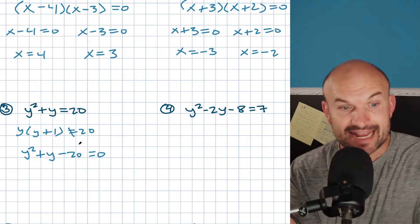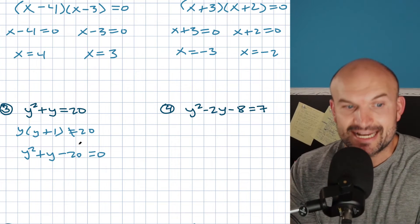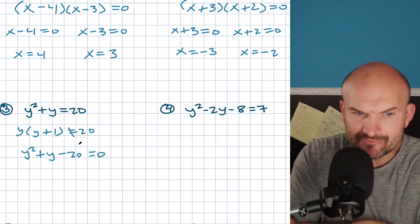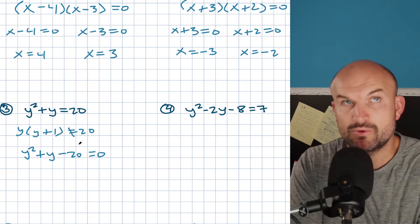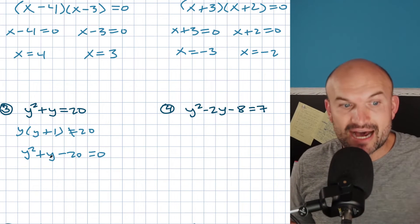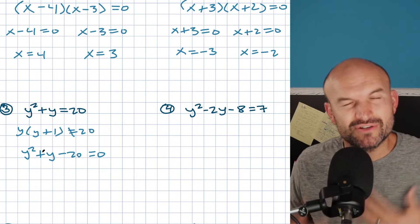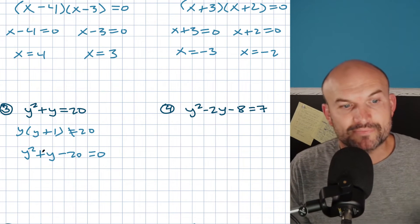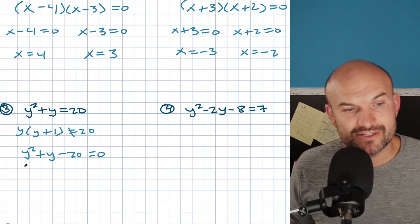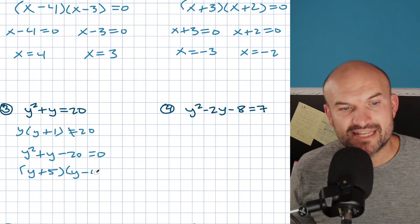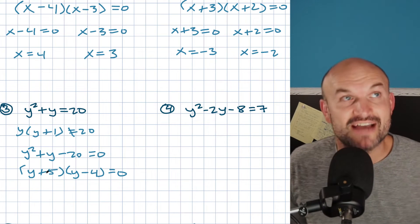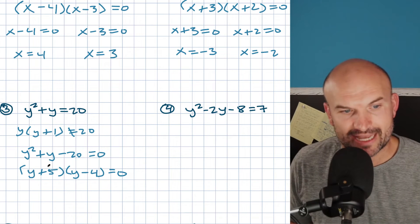Now my last term is negative, so instead of looking for two factors that sum to the middle term, I'm looking for the difference of my two factors. The difference needs to give me my middle term. So I look at the factors of 20: 20 and 1, 10 and 2, 5 and 4 — and 5 and 4 have a difference of 1. That difference needs to be a positive 1. One of those factors is negative, so: is it positive 5 plus negative 4, or negative 5 plus positive 4? It's positive 5 plus negative 4, giving positive 1.